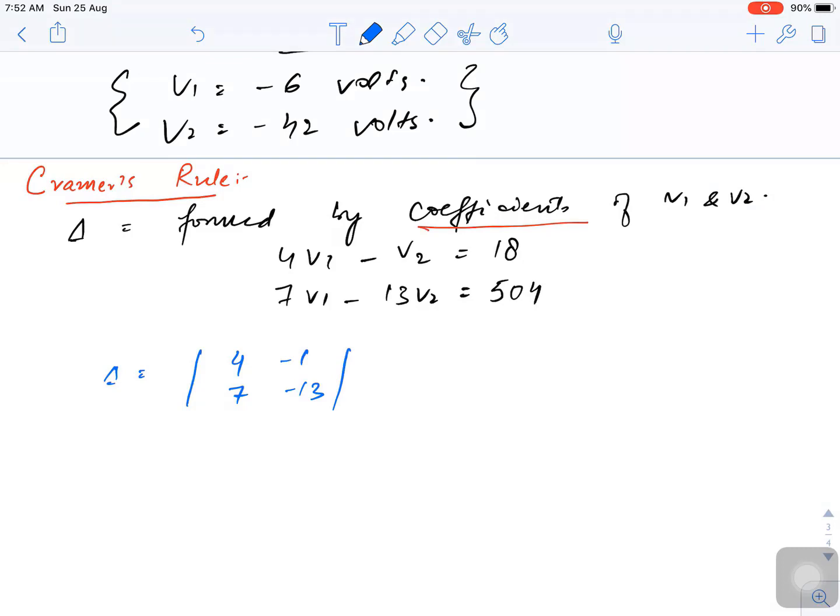Now you need to solve it. So it would be 4 times minus 13 minus minus 1 times 7. So you would get minus 52 plus 7. The answer is minus 45. Your delta is minus 45.